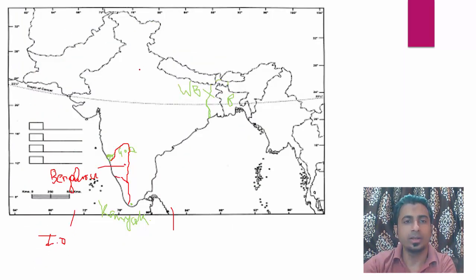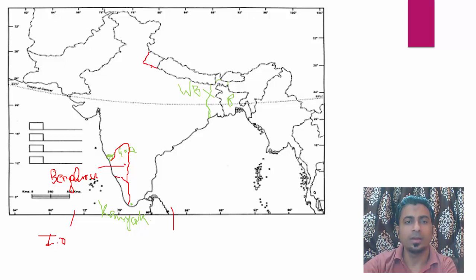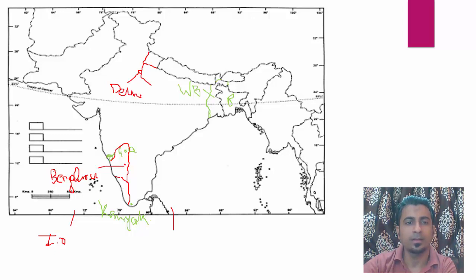Next is Delhi. We all know where Delhi is. Delhi is bounded on three sides by Haryana and on one side by Uttar Pradesh. So if this is Uttarakhand and from here starts Uttar Pradesh, Delhi will be somewhere here — bounded on three sides by Haryana and one side by Uttar Pradesh. Very easy.